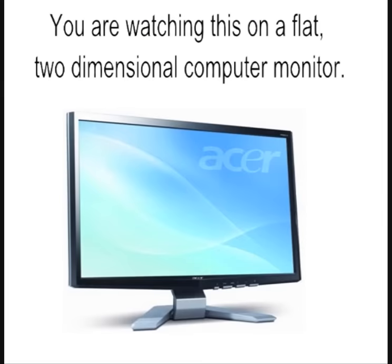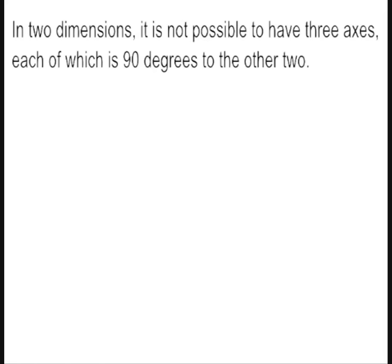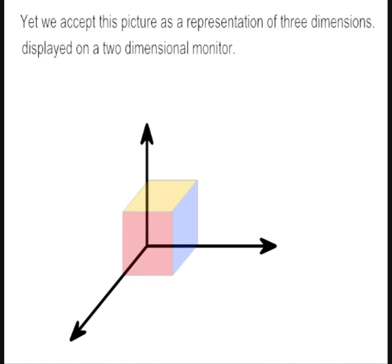You are watching this on a flat two-dimensional computer monitor. In two dimensions, it is not possible to have three axes, each of which is 90 degrees to the other two. Yet we accept this picture as a representation of three dimensions, displayed on a two-dimensional monitor.